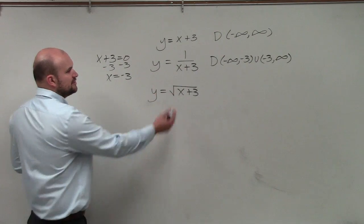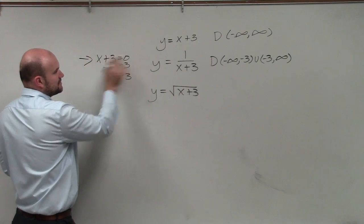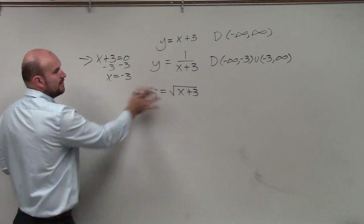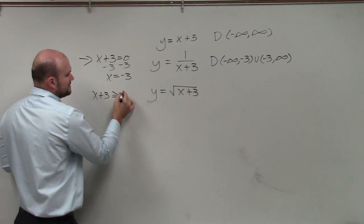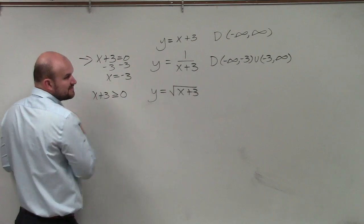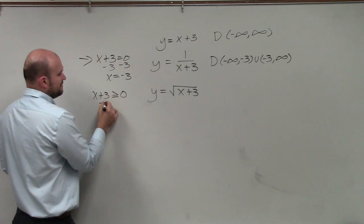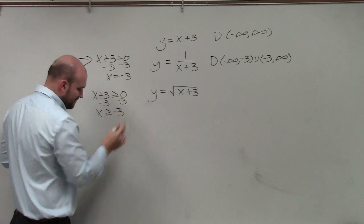So how do we determine what numbers, then, are part of our domain and not a part of our domain? Well, when it's rational, we set the denominator equal to 0. When it's a radical, we set our radicand greater than or equal to 0. Because it can be 0, you can take the square root of 0. Square root of 0 is just 0. So then we solve.